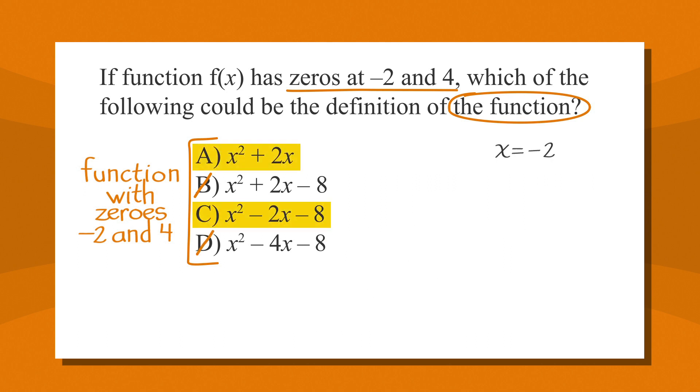We're down to two answer choices, A and C. Luckily, we still have one zero we can check. Let's plug 4 into these two choices and see which one works. Answer choice A becomes 4 squared plus 2 times 4. That's clearly not equal to 0, so cross off answer choice A. We know the correct answer has to be C, but let's give it a quick look for good measure. When we plug in 4, answer choice C becomes 4 squared minus 2 times 4 minus 8. That works out to 16 minus 8 minus 8. And sure enough, that equals 0. C is the correct choice.